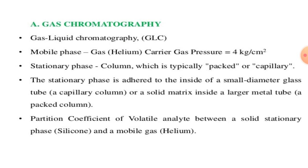In gas chromatography, the mobile phase is a gas — typically helium — with carrier gas pressure of 4 kg/cm². The stationary phase is silicone. The column is typically packed or capillary: the stationary phase is coated inside a small diameter glass capillary tube, or within a solid matrix inside a larger metal packed column. The partition coefficient is of a volatile analyte between the solid stationary phase (silicon) and the mobile gas phase (helium).